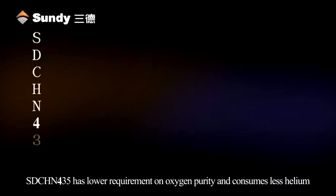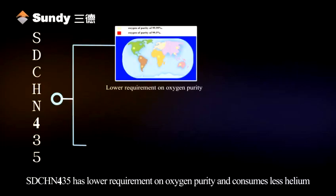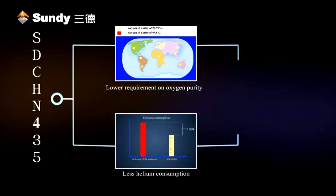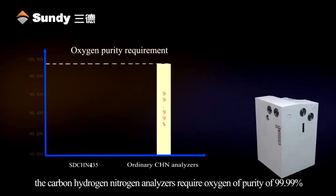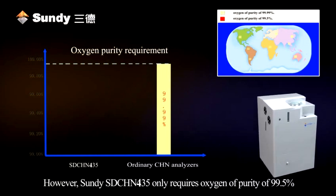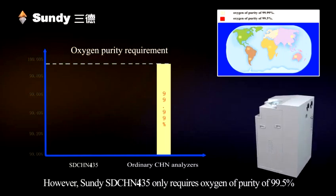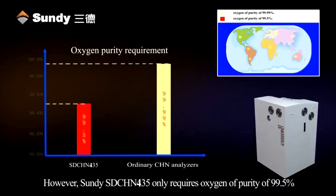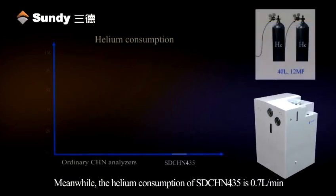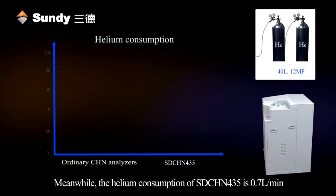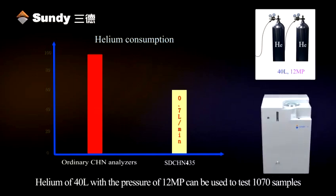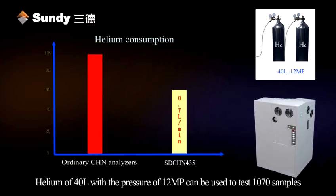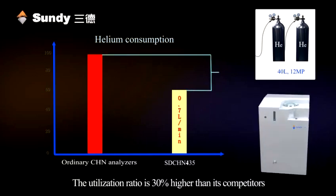SDCHN 435 has lower requirements on oxygen purity and consumes less helium. In most cases, carbon-hydrogen-nitrogen analyzers require oxygen of purity 99.99%, which is not available in certain districts. However, SDCHN 435 only requires oxygen of purity 99.5%. Meanwhile, the helium consumption of SDCHN 435 is 0.7 liters per minute. Helium of 40 liters with a pressure of 12 MPa can be used to test 1,070 samples — a utilization ratio 30% higher than its competitors.